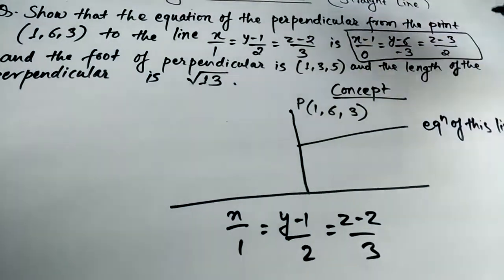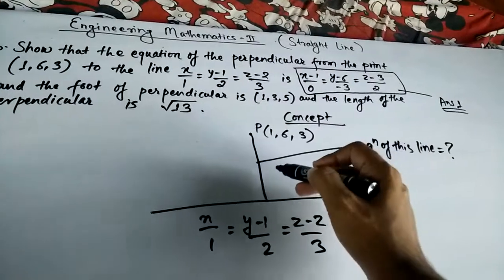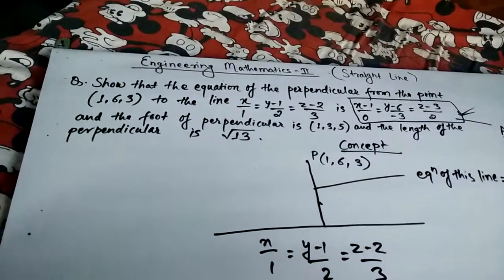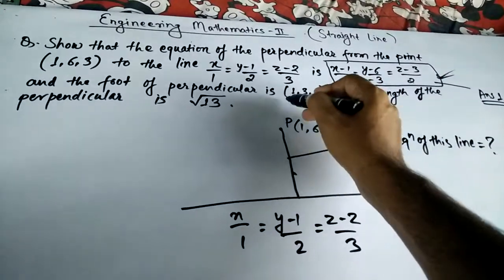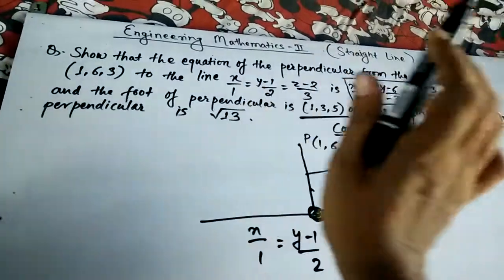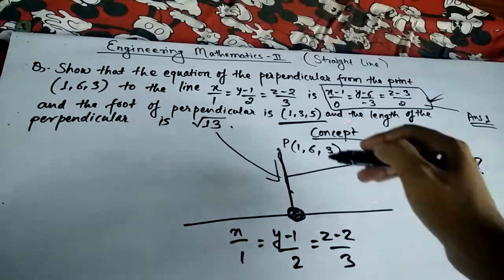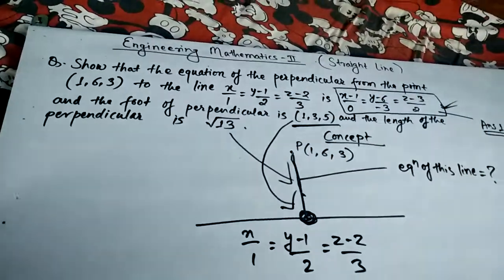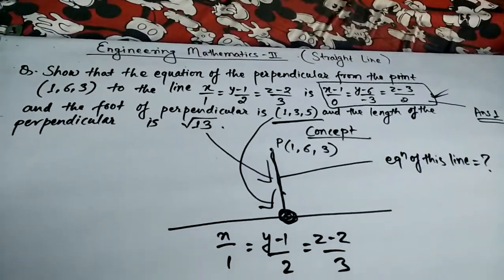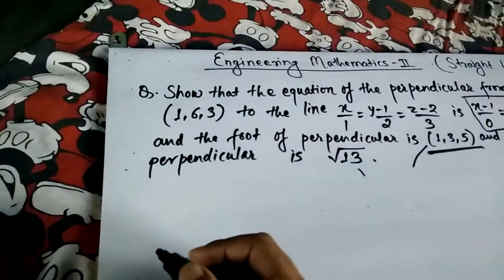The first answer — the equation of the perpendicular line — is already given. We also have to find the foot of perpendicular, which equals (1,3,5), and the length of perpendicular, which equals √13. Everything is given but we have to prove it. Now let's start the solution.